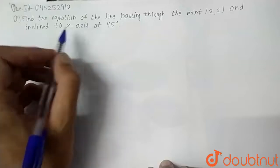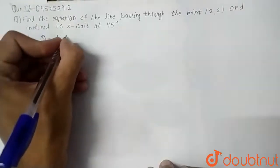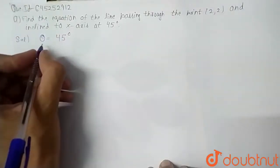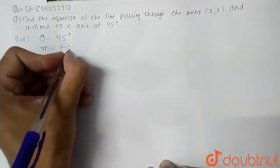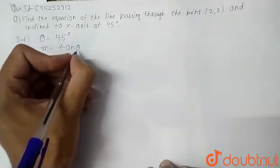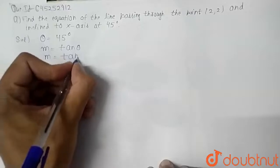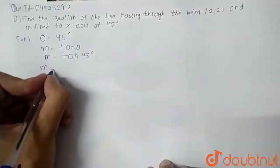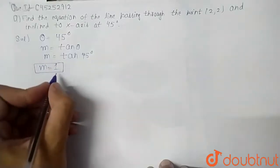They are given that angle theta is equal to 45 degree. We know that in straight line, m is the slope, m is equal to tan theta. So tan theta is 45 degree, so m is equal to tan of 45 degree. We all know tan 45 is 1. So m is equal to 1, our slope m is equal to 1.